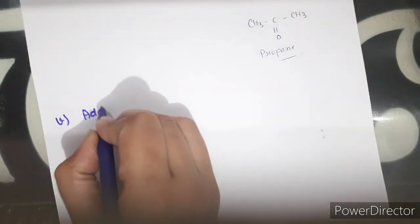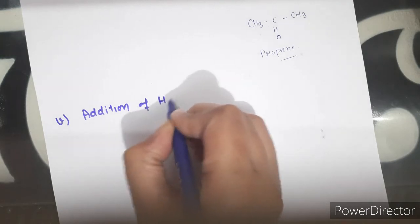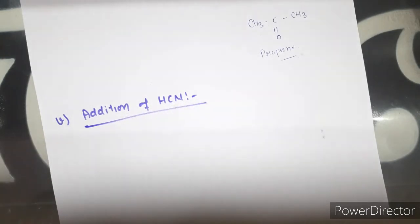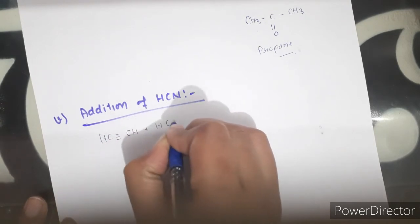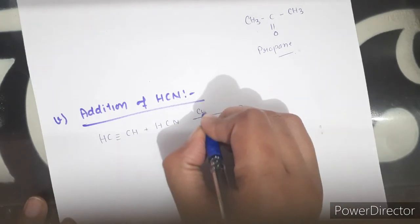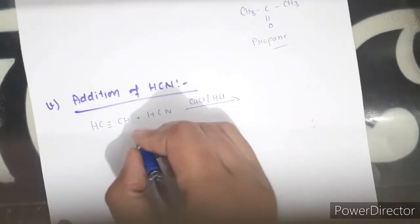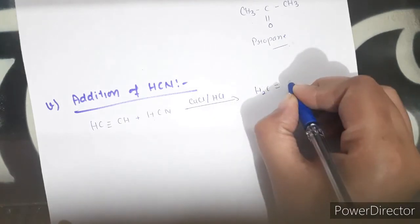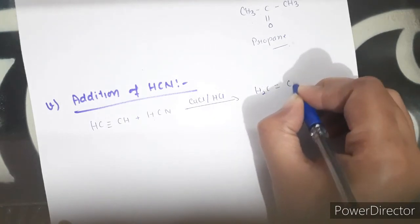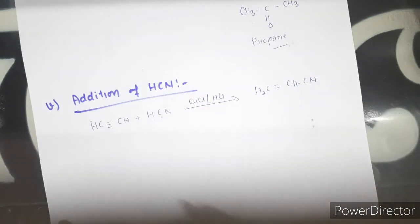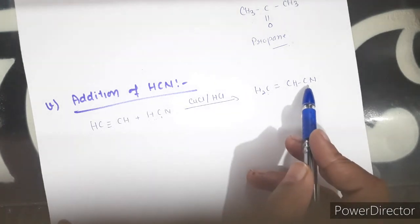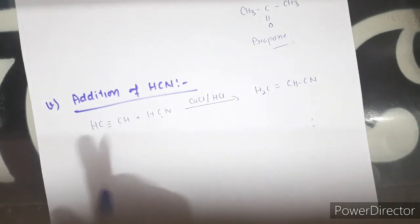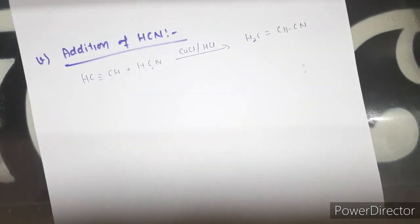Next is addition of hydrogen cyanide. This reaction is carried out in the presence of cuprous chloride and HCl catalyst. The H⁺ attacks one carbon and the CN⁻ attaches to the other carbon, giving the product where the second carbon is attached to the CN group.